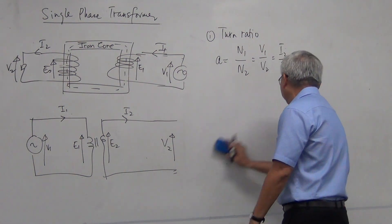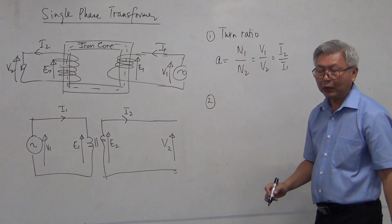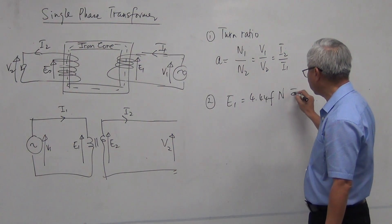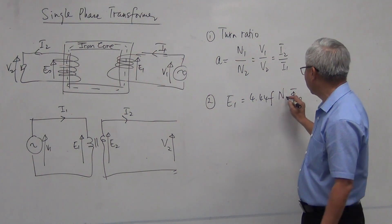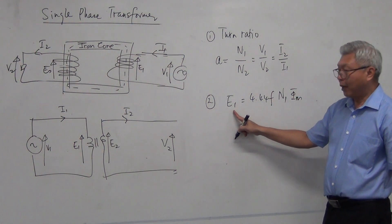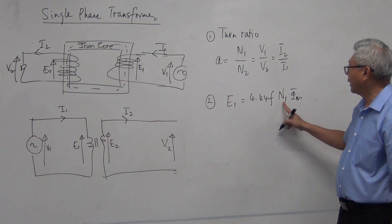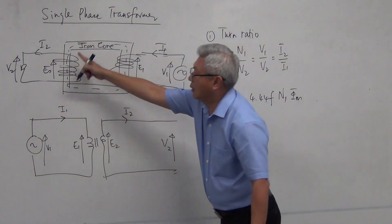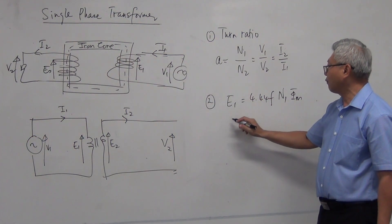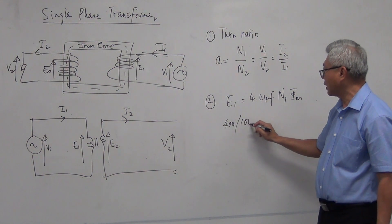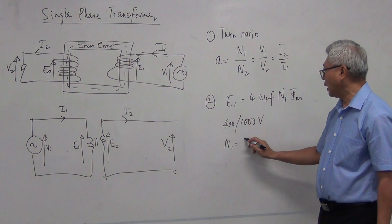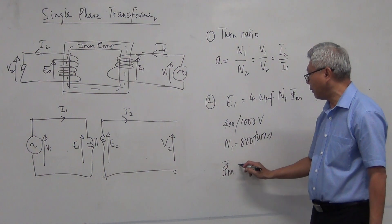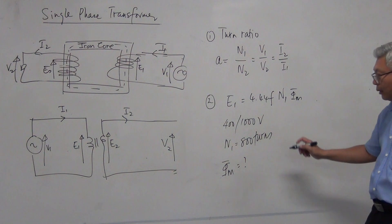The next important formula involves the maximum flux: E1 equals 4.44 times F times N1 times the maximum flux (Φmax). If I know the primary voltage, the frequency of my power supply, and the number of turns, I can find the maximum flux in the iron core. For example, for a 400 to 1,000 volt, 50 Hz step-up transformer with N1 equal to 800 turns, I want to find the maximum flux.